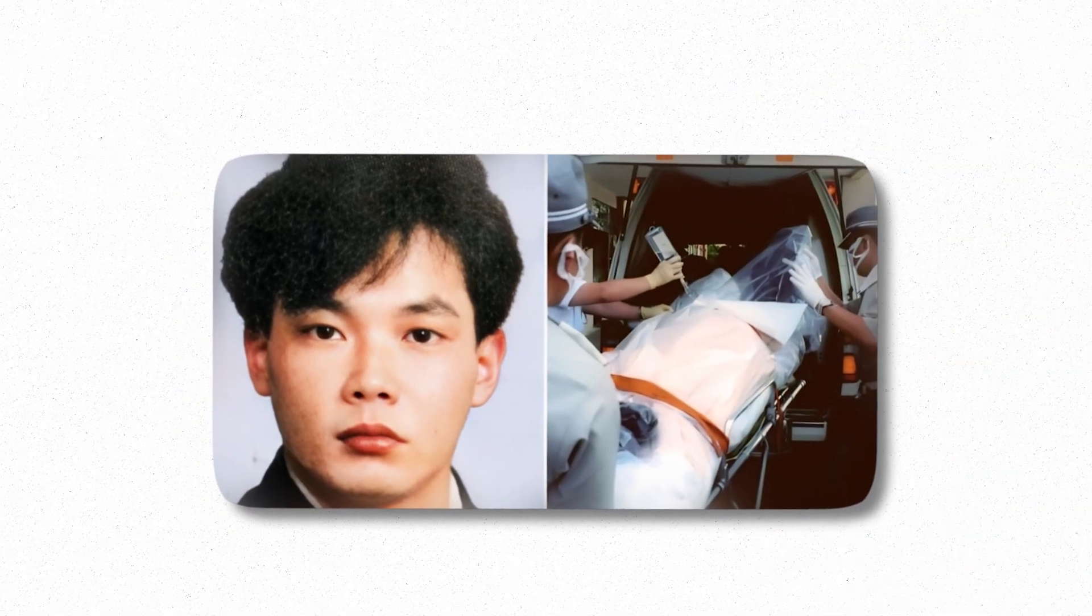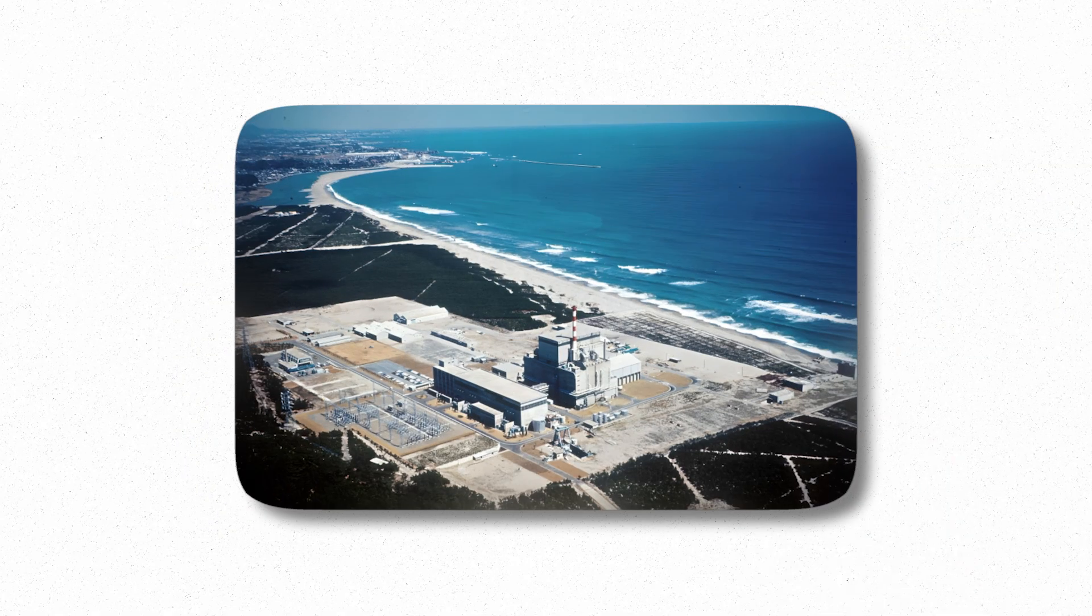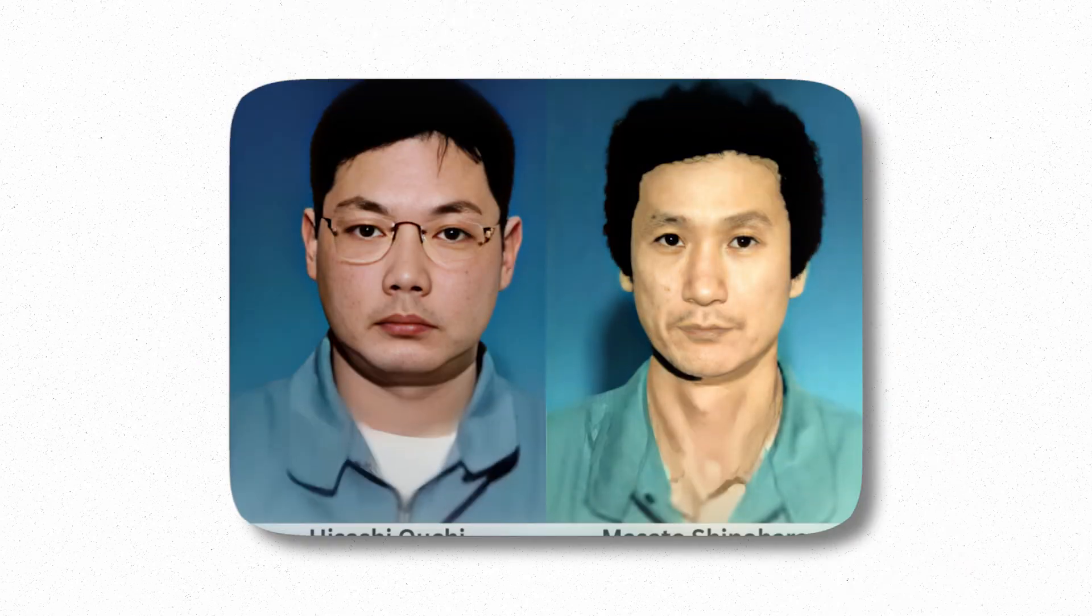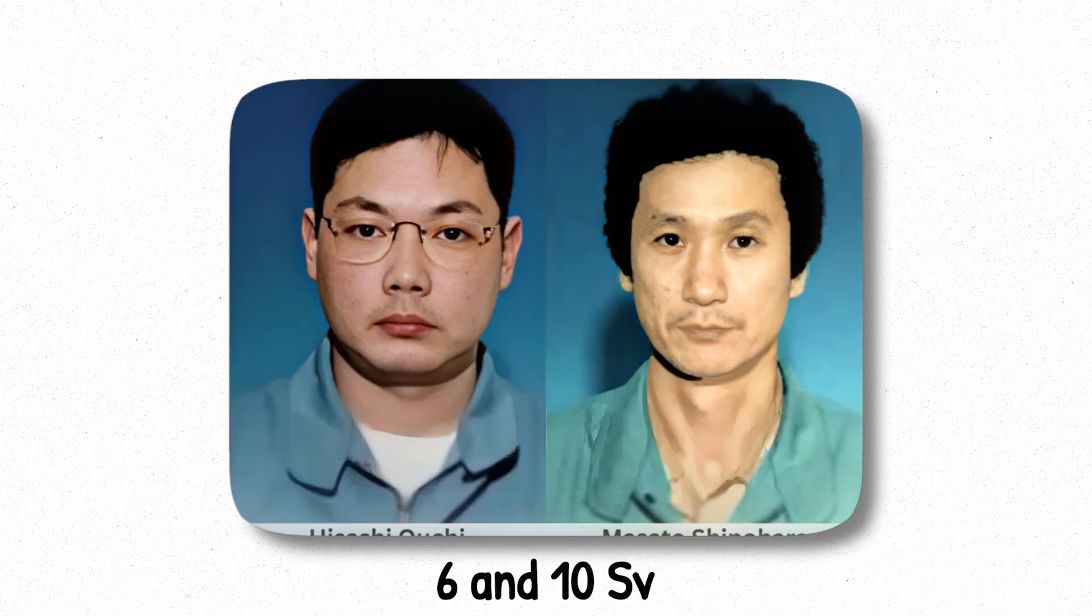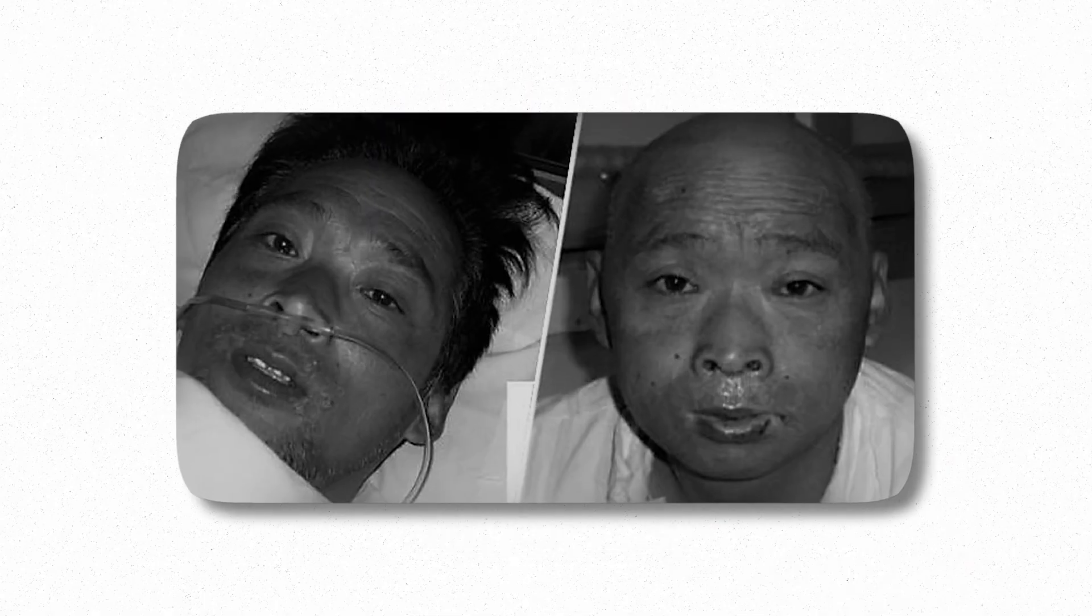Real-world examples are chilling. In 1999, during the Tokaimura nuclear accident in Japan, plant workers Hisashi Uchi and Masato Shinohara were exposed to estimated doses between six and ten sieverts during an uncontrolled nuclear reaction. Their bodies began failing immediately. Auchi suffered repeated organ failure, loss of skin, and eventually brain damage. Despite intensive medical intervention, he died after 83 days in a state of continuous suffering. Shinohara lasted longer, but not much.